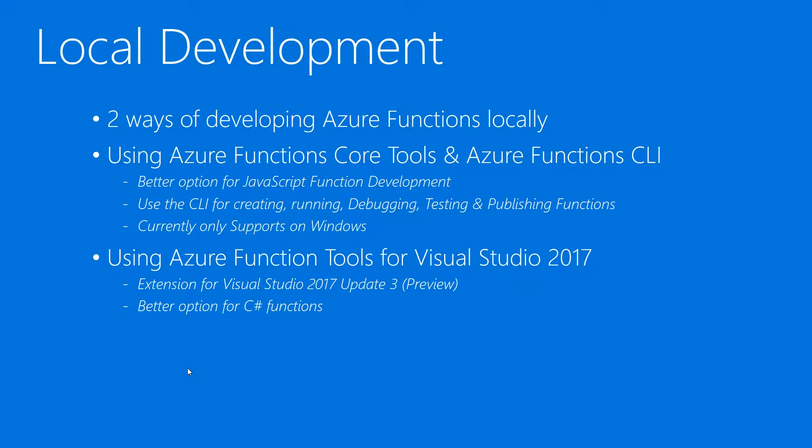You can use the function CLI to create, run, debug and test the function application locally. The next option we have is to use Visual Studio 2017 with the Azure Function Tools for Visual Studio 2017 extension installed. This provides Azure Functions project templates into Visual Studio and the tooling necessary to create the Azure Functions.